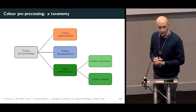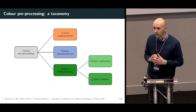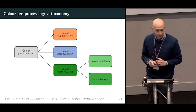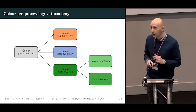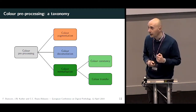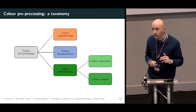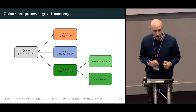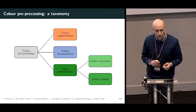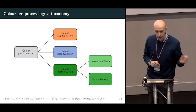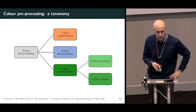Regarding methods, color pre-processing includes different classes of methods. We attempted a taxonomy here and divide these methods into three different classes: color augmentation, which was not investigated in this work, then color deconvolution, and color normalization — which can be further subdivided into color constancy and color transfer.